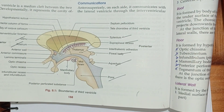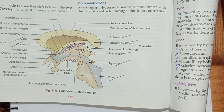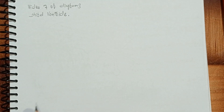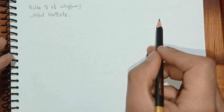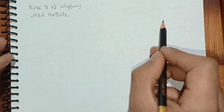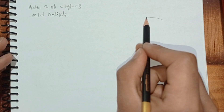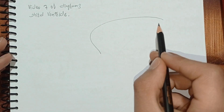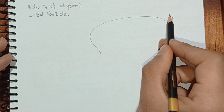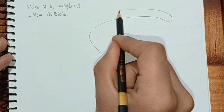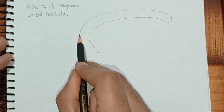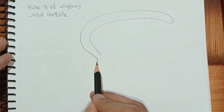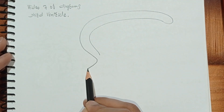BDC gives this diagram in figure 9.1. Let's learn how to draw this diagram. First we will make a structure called corpus callosum, like this, and we will continue it like this, and right here we will make a structure like this.